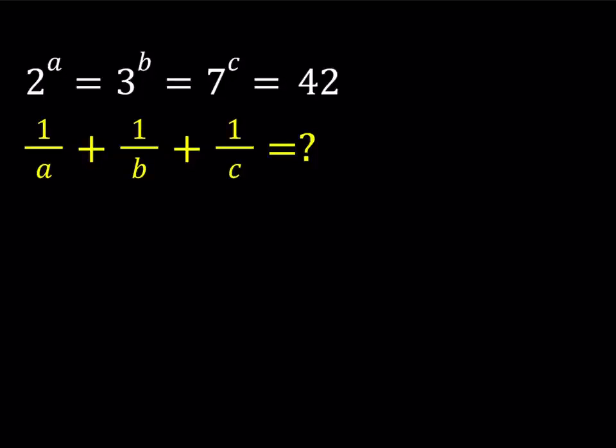2 to the power A equals 3 to the power B equals 7 to the power C and that equals 42. And we're supposed to evaluate 1 over A plus 1 over B plus 1 over C.